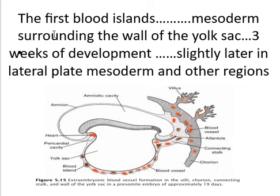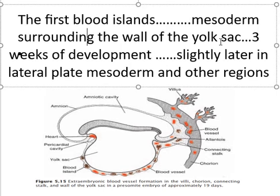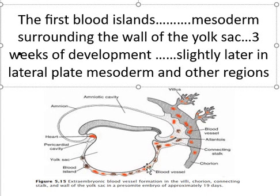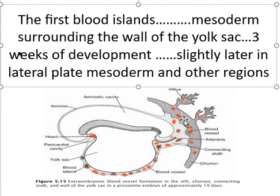Now, how do blood islands develop? First they will appear in the mesoderm surrounding the wall of the yolk sac — this is the yolk sac and this is the mesoderm surrounding its wall — at the third week of development. Slightly later the blood islands will appear in the lateral plate mesoderm, and then in other regions such as the trophoblast, where blood islands are also present.